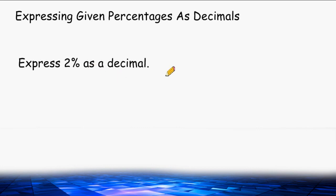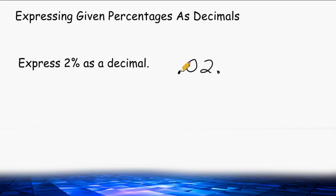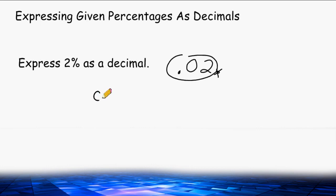Let's try another example: 2%. We take 2, put a decimal at the end, and move the decimal point two spaces to the left. We add an extra zero and get our answer: 0.02.